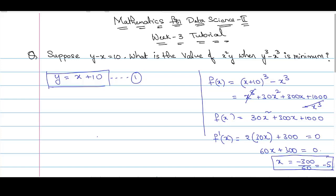Now, to check whether this critical point is maxima or minima, we will check the sign of f double dash of x at this point. f double dash of x will be 60. f dash of x is 60x plus 300. If we again differentiate with x, we will get 60, which is greater than 0.